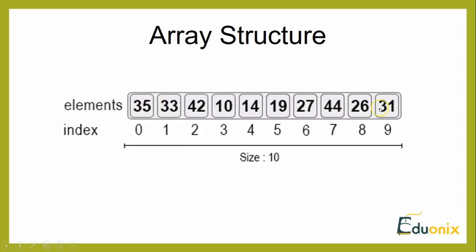As shown in this diagram, if we have 10 elements, we cannot say the first element is at index 1. The index starts at 0, then 1, 2, 3, 4, 5, 6, 7, 8, 9 — giving a size of 10. If the array length is 10, it means we can store 10 elements.